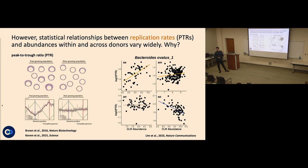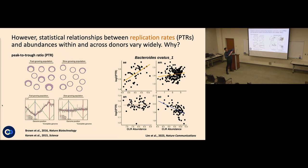Another way to measure growth rate in the gut is peak-to-trough ratios, a trick from Korem et al. in the Segal lab (Science, 2015). E. coli can double every 20 minutes but takes 50 minutes to replicate its genome, so it has to parallelize genome replication with many replication forks at the origin. This means DNA aggregates towards the origin of replication and there is less DNA towards the terminus. If you map short reads to a chromosome with origin on one side and terminus on the other, you see asymmetric read pileup in fast-growing taxa.